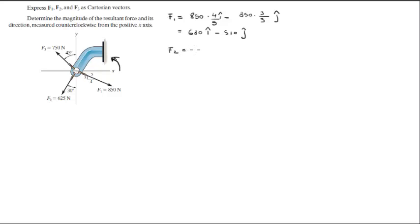Now let's do F2. F2 equals negative 625 times sine of 30 degrees in the i direction minus 625 cosine of 30 degrees in the j direction.